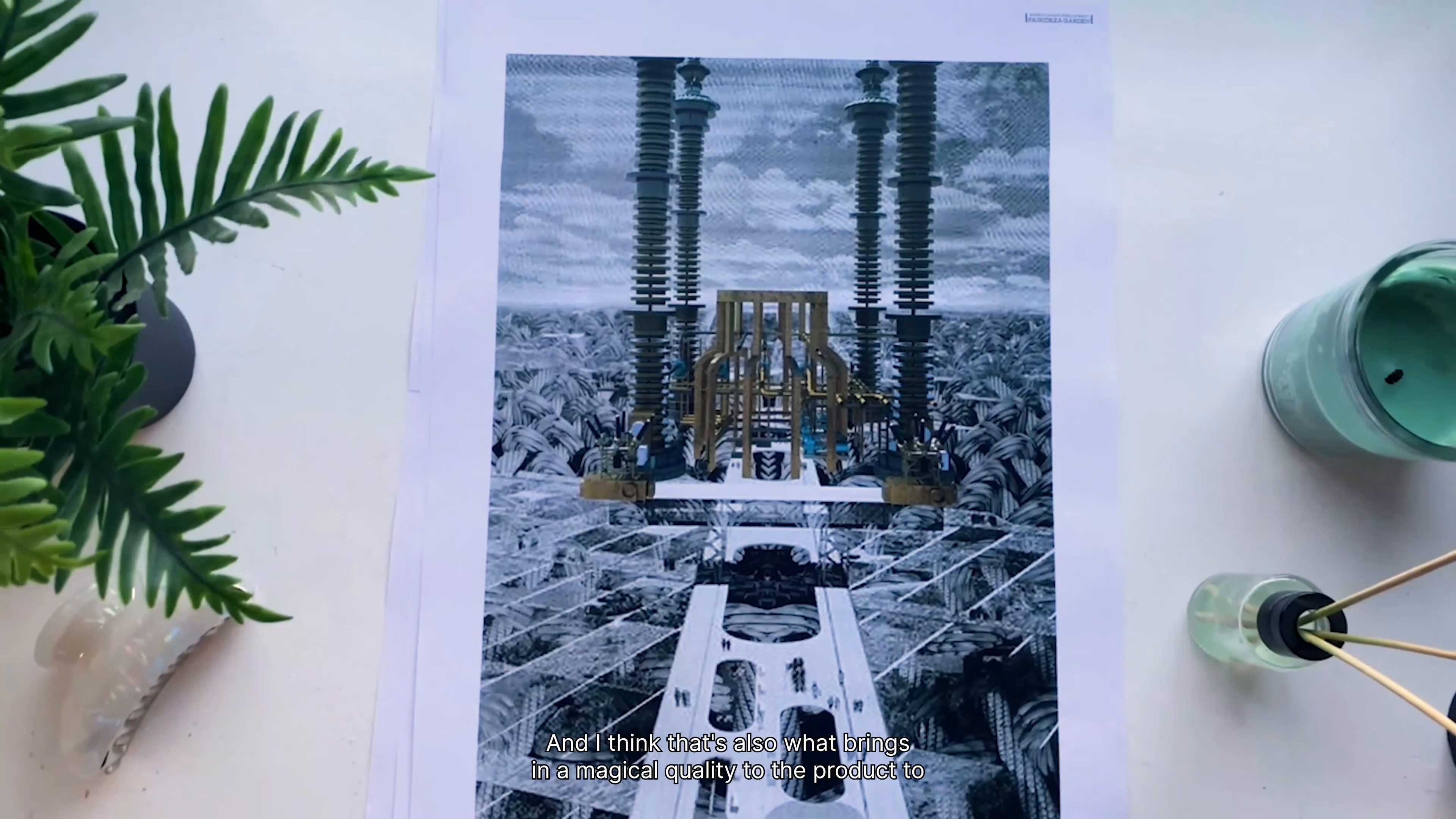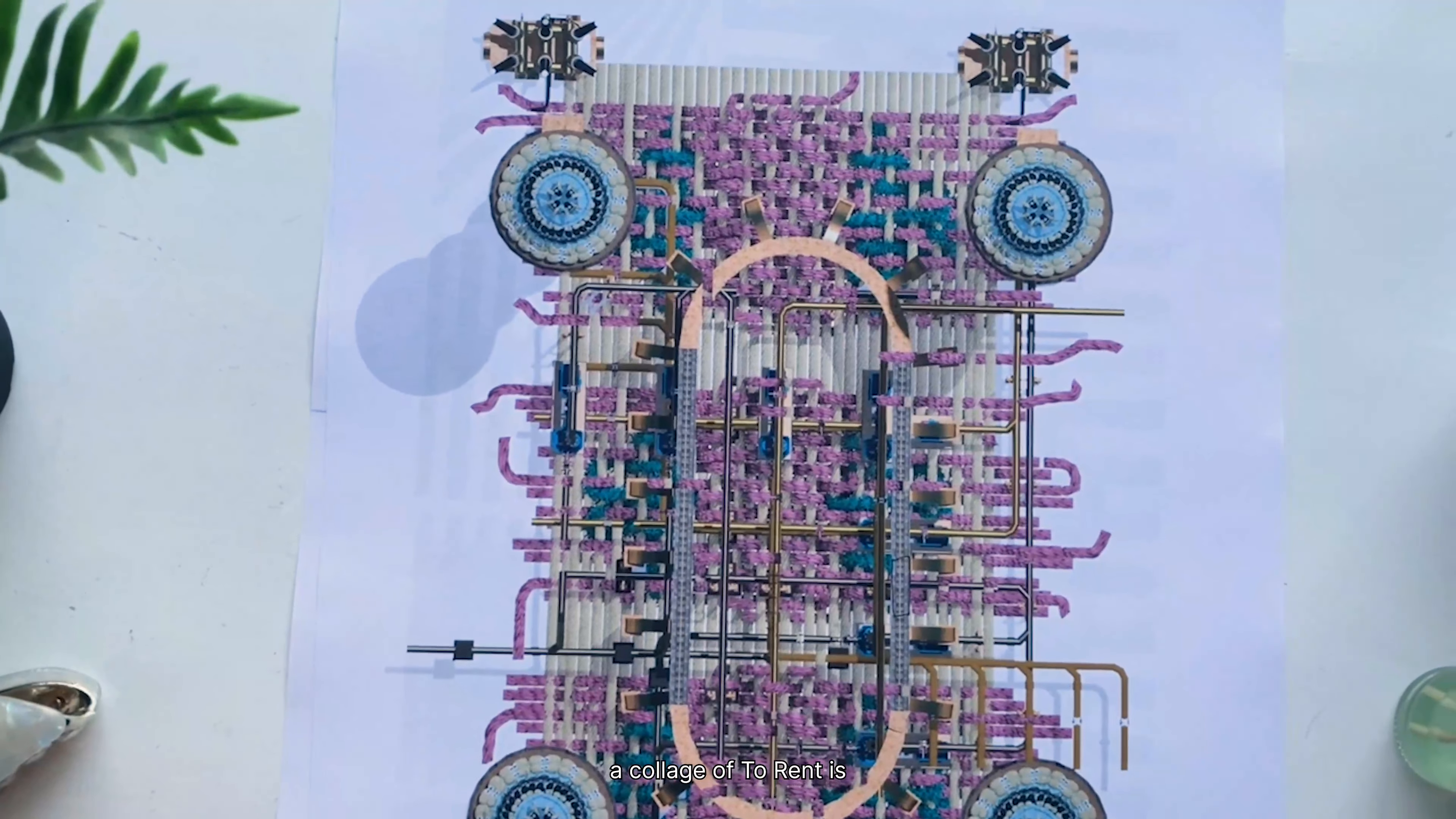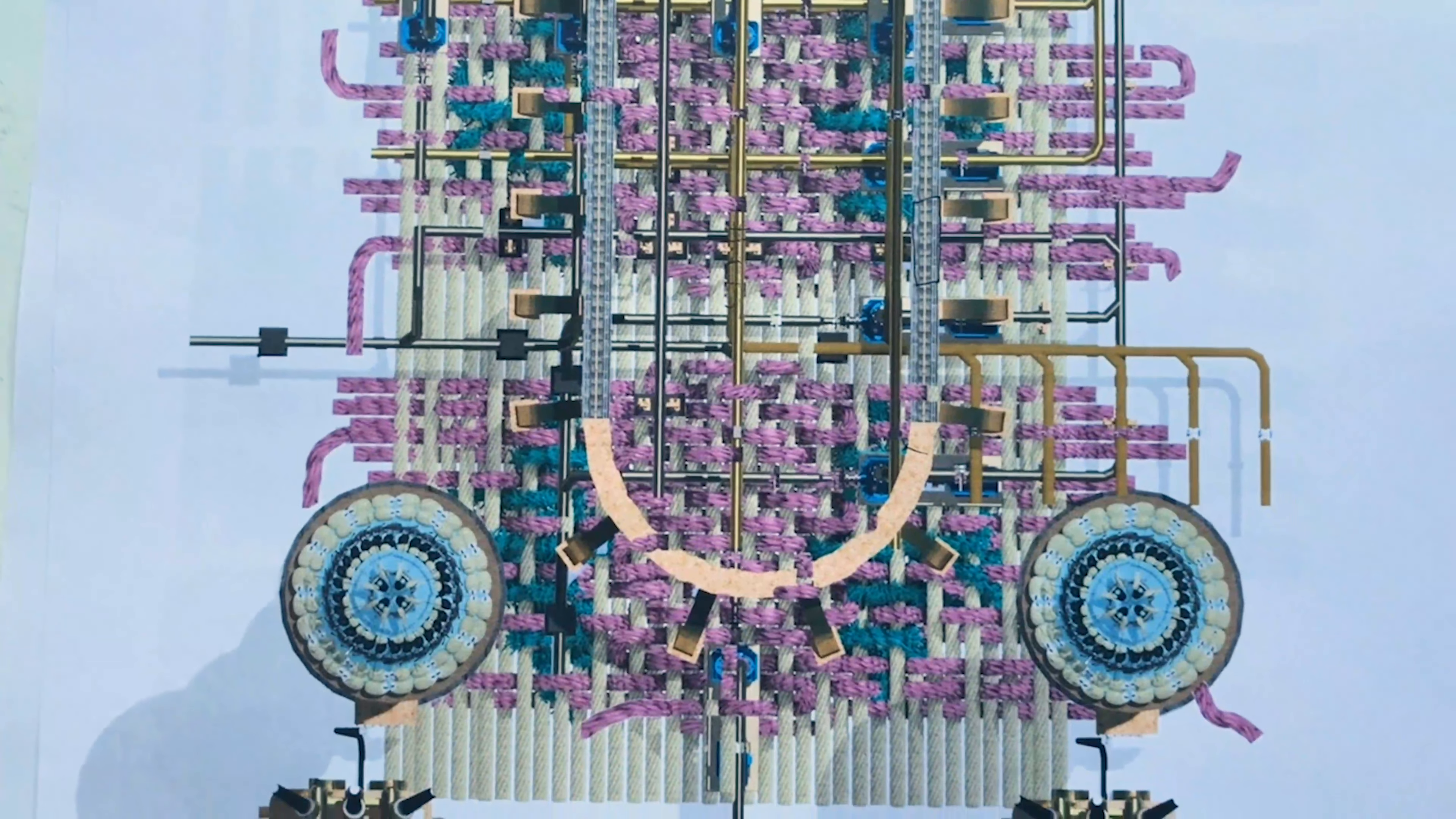This next render that I did was probably the most successful thing of the week and ended up taking me about a whole day to do. But it's essentially a collage of two renders. One of them is this substation model which has all this infrastructure, all these pipes, the fountain that I designed previously, and then the other render is of these weaves that I've also constructed and designed.